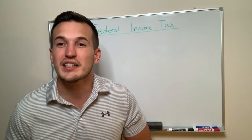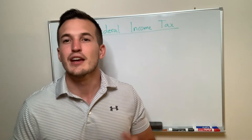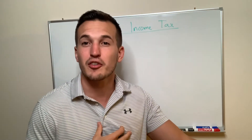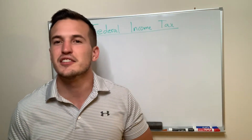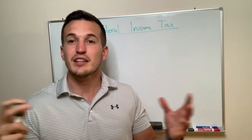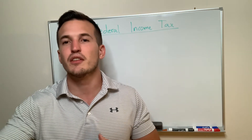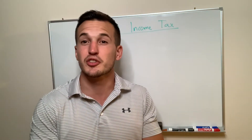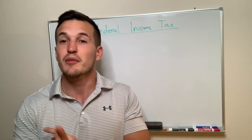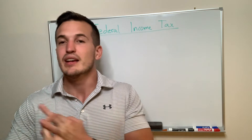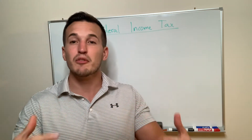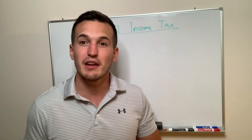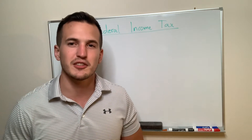Let's start off with what is federal income tax. Federal income tax is the money that you pay to the federal government of the United States. This money goes into the things that everyone uses in the country — Social Security, the military, Medicaid, all these government benefits. Somebody has to pay for them, and that's what federal income tax is.